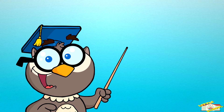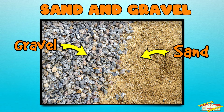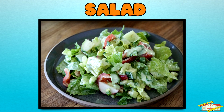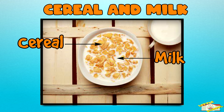Let's go over some examples of mixtures. Sand and gravel — you can see each bit of sand and each rock. Salad — lettuce, tomatoes, cucumbers, and other ingredients are mixed but can be separated easily. Cereal and milk — you can see the cereal floating in the milk and separate them if you want.